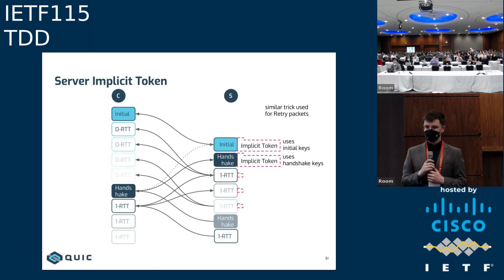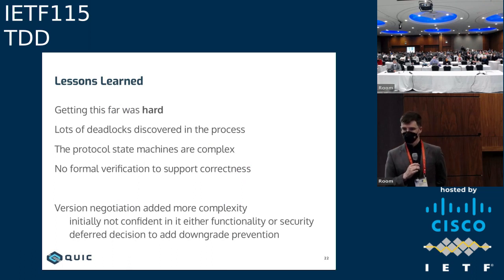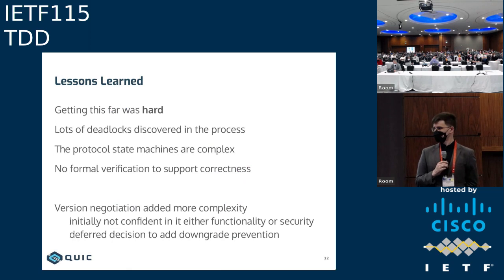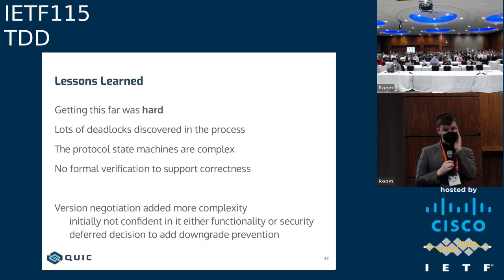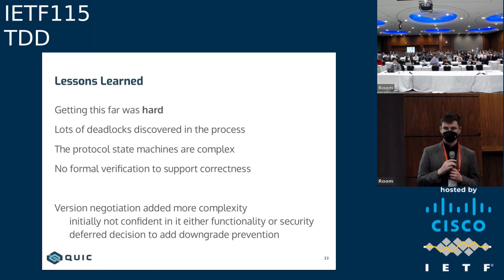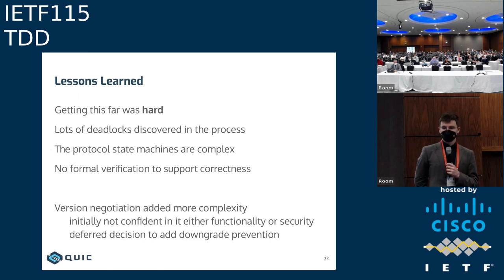All of this is somewhat fiddly to get right. There were a lot of deadlocks discovered in the process — we spent the better part of two years going back and forth over some of the trickier ones, with certain people having a very good habit of finding new ones every time we thought we fixed them. One remaining point of discomfort is that we don't really have any formal verification to support the correctness of the handshake. We've spoken to academics about this, and there are systems that might be able to prove these things, but it's rather challenging. And version negotiation adds even more complexity.